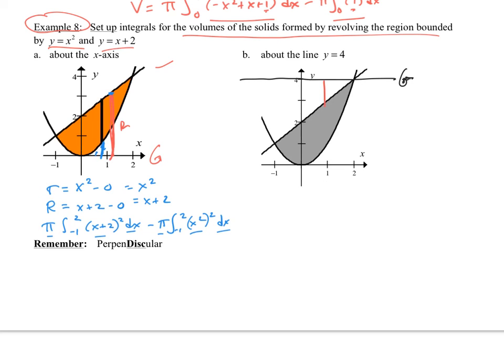From the axis of rotation to the outer edge here. That's my big r. And then I draw my little r from the axis of rotation to the inner curve. So that would be that r.